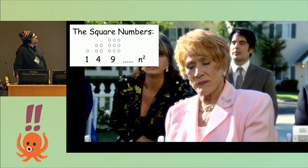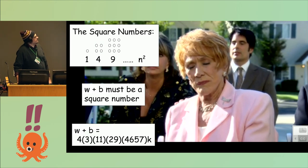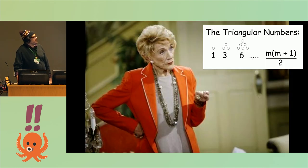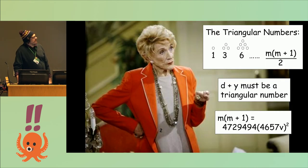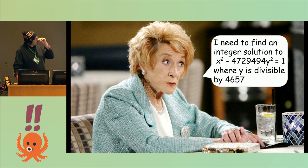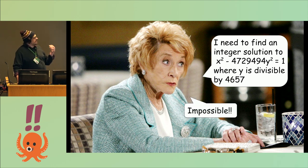So Catherine knows about square numbers. She works some stuff out, does some factoring, gets a result about what k should be. She knows about triangular numbers, does a few more things with the square number stuff, and she ends up figuring out, hey, all I need to do is find an integer solution to this equation where y is divisible by 4657. That's kind of where she stops. Not really possible.